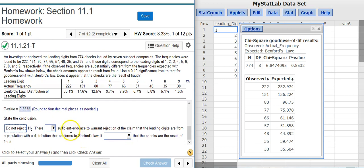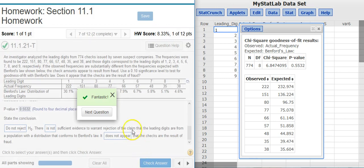So, sufficient evidence to warrant rejection of the claim that the leading digits are from a population with a distribution that conforms to Benford's Law? Well, it's probable that we're actually conforming to Benford's Law, so that means we're not going to reject that claim. Therefore, we're going to say there is not sufficient evidence. And since it seems like we're conforming to Benford's Law distribution, it doesn't appear that we have any instance of check fraud here. I check my answer. Fantastic!